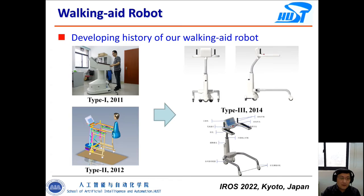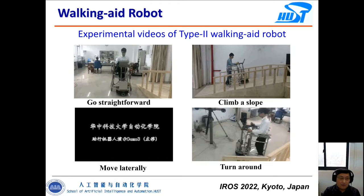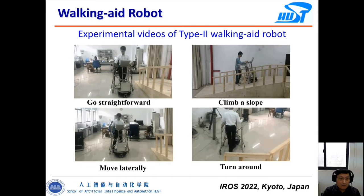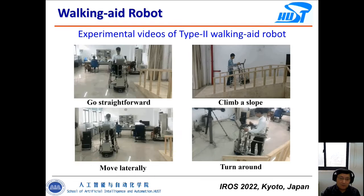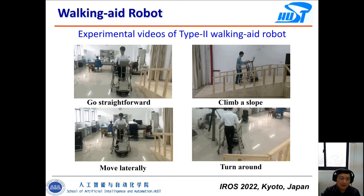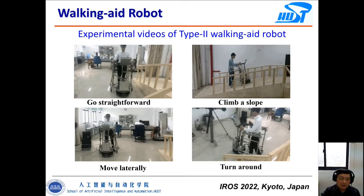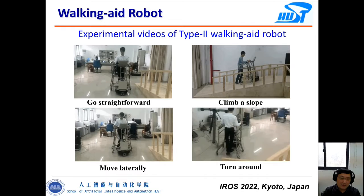This is the second type of walking aid robot — more like an intelligent walker. We started this project from 2011 and designed four versions of this walking aid robot. Similar to the cane robot, this robot has an omnidirectional mobile base, so it can help people walk straight forward, move laterally, turn around, and also climb slopes.